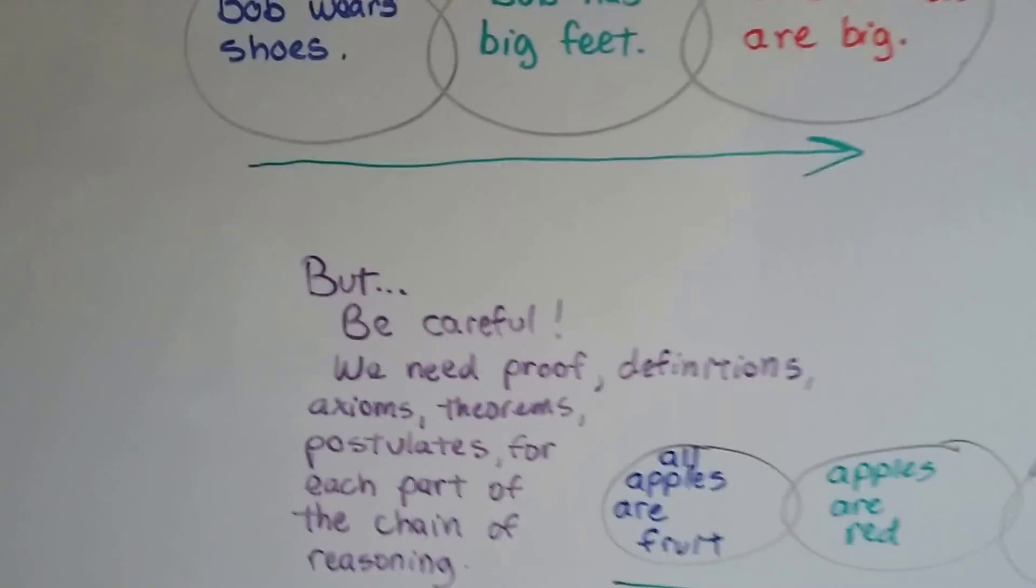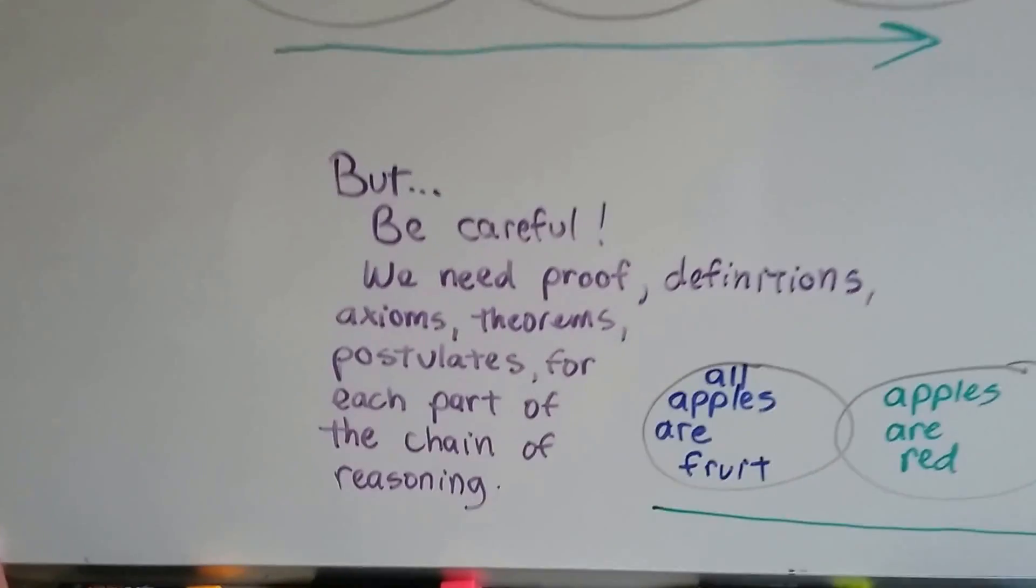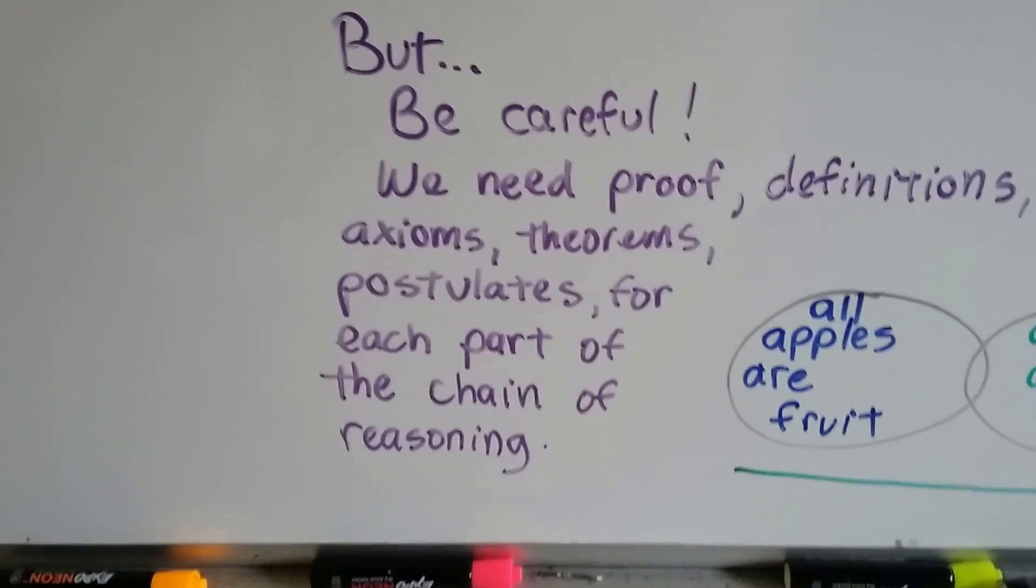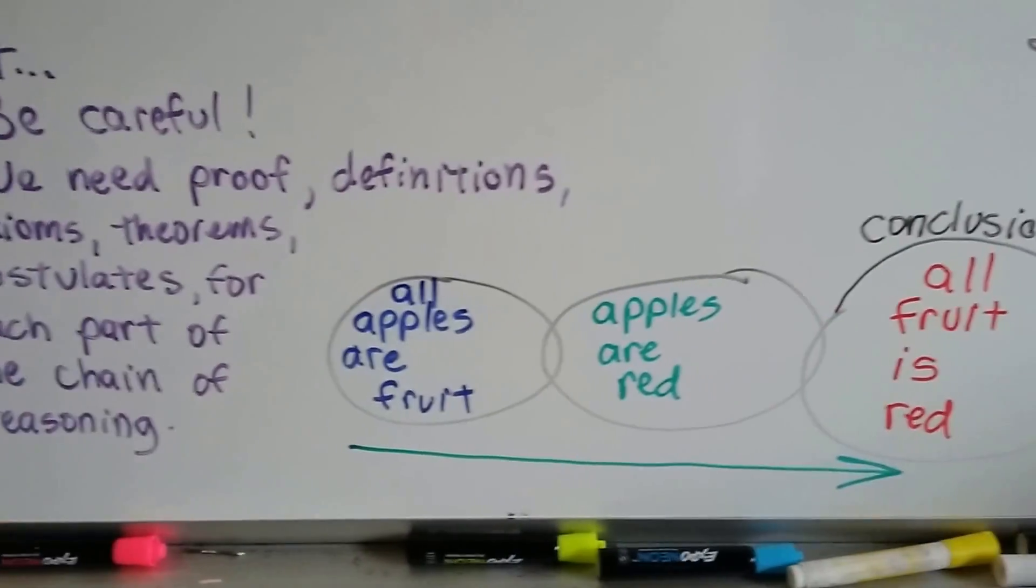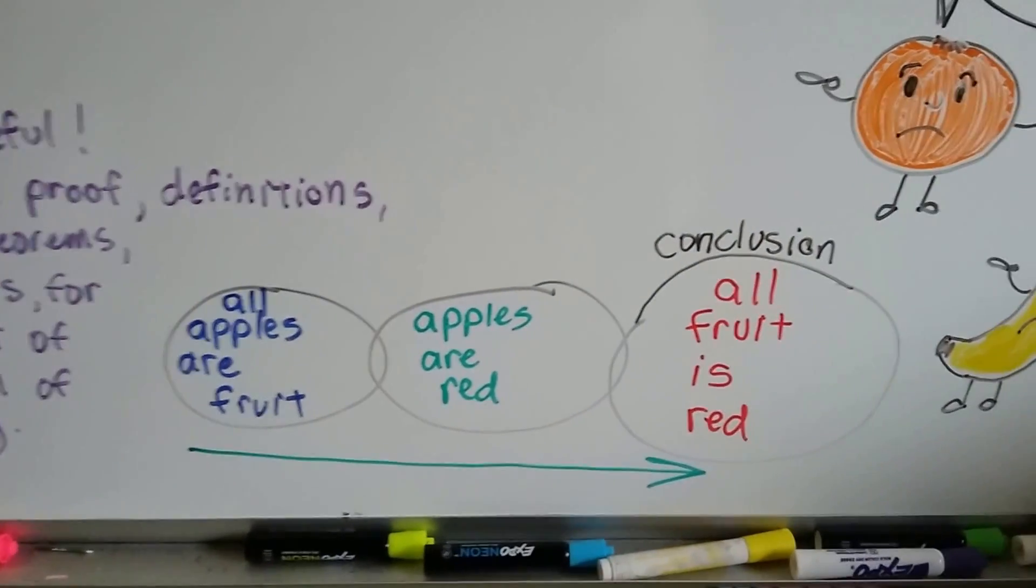But be very careful because we need proof, definitions, axioms, theorems, postulates for each part of the chain of reasoning. Take a look. All apples are fruit. Apples are red.